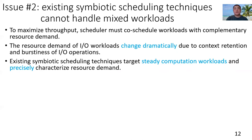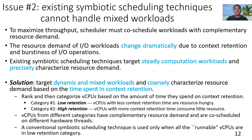However, the resource demand of IO workloads changes dramatically due to context retention and burstiness of IO operations. Our solution targets dynamic and mixed workloads with coarsely characterized resource demand based on the time spent in context retention. It ranks and categorizes VCPUs based on the amount of time they spend on context retention. In the first category, VCPUs have less context retention time — they are resource hungry.